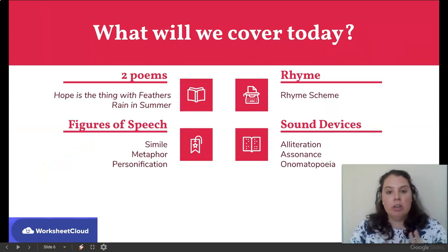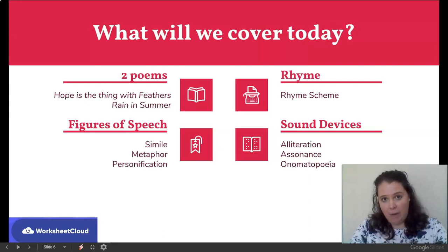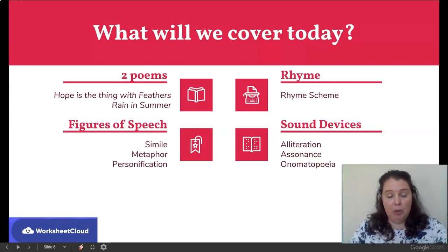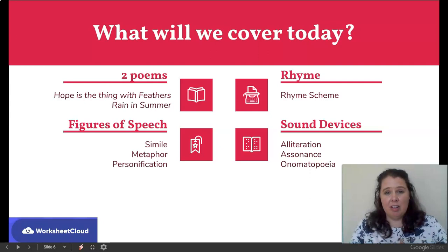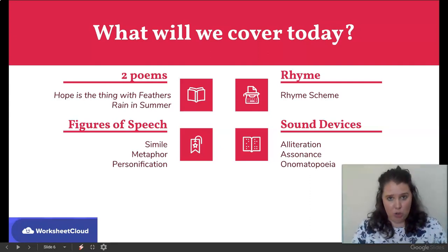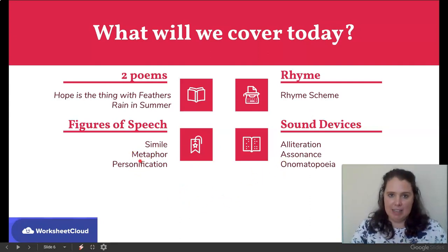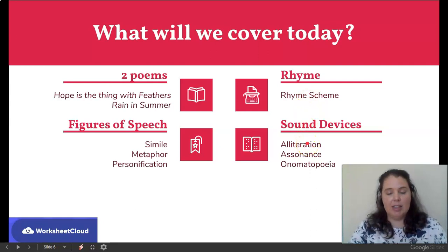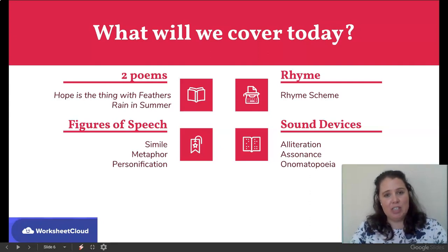So what we are going to be covering today: we are going to look at two poems. One is called 'Hope is the Thing with Feathers' — I thought hope is something we all need in this time. Then I'm looking at 'Rain in Summer.' While we look at the two poems, we are going to break down certain elements: figures of speech — simile, metaphor, personification — rhyme scheme, and sound devices — alliteration, assonance, onomatopoeia. Please always remember how to spell onomatopoeia. Just remember one poem is never going to cover all figures of speech and all sound devices, so when we look at a poem, we extract what we can identify but don't force something that isn't there.